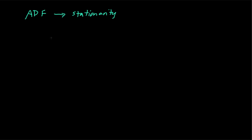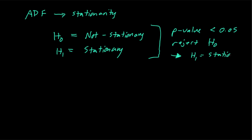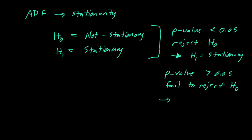For the ADF test, the null hypothesis is that the data is not stationary, and the alternative hypothesis is that it is stationary. If our p-value is less than 0.05 we reject H-naught, meaning we accept that the data is stationary. If the p-value is greater than 0.05, we fail to reject H-naught, which means we accept the fact that our data is not stationary.